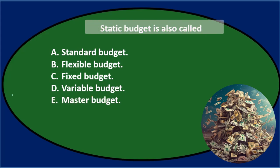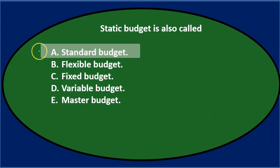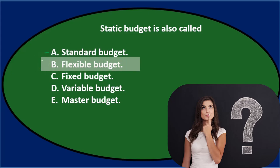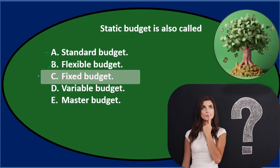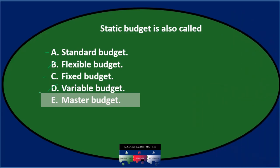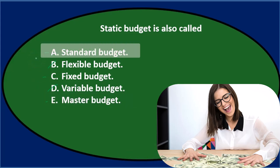Let's go through this using the process of elimination. A standard budget sounds like it could possibly be static. Flexible budget implies some kind of movement and flexibility, so it doesn't seem like that. Fixed budget seems kind of static — like it's not moving — so that could be a static type budget. Variable budget implies movement, so I don't think it's D. Master budget might be a static budget, so I'll keep that one for now. Remaining options: A, C, and E.